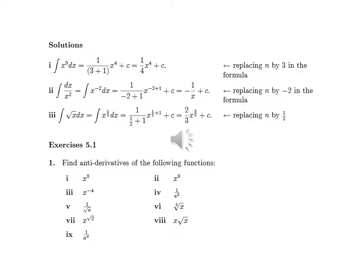We will continue with solutions about the previous examples. The integral of x³ dx equals 1 over 3+1 times x to the power 4 plus C, equal to one quarter x⁴ plus C. The integral of dx over x² equals the integral of x to the power minus 2 dx, equal to x to the power (minus 2 plus 1) over (minus 2 plus 1), which equals minus 1 over x plus C.